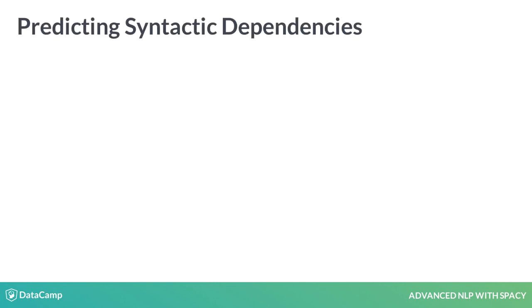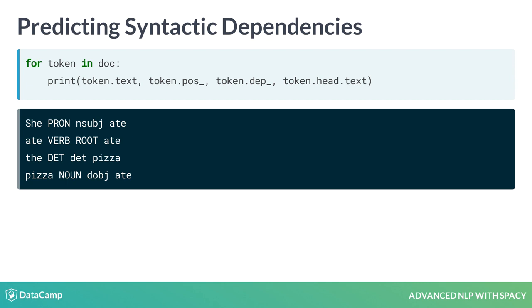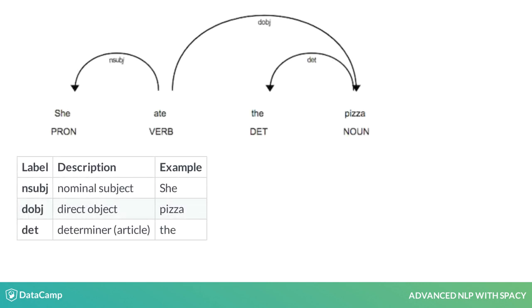In addition to the part-of-speech tags, we can also predict how the words are related — for example, whether a word is the subject of the sentence or an object. The dep_ attribute returns the predicted dependency label. The head attribute returns the syntactic head token — you can also think of it as the parent token this word is attached to. To describe syntactic dependencies, spaCy uses a standardized label scheme. The pronoun 'she' is a nominal subject attached to the verb — in this case, to 'ate.'